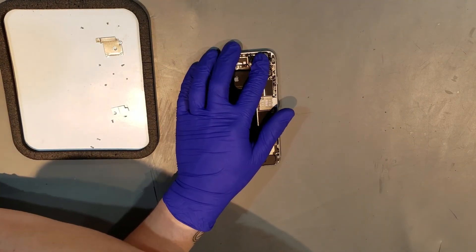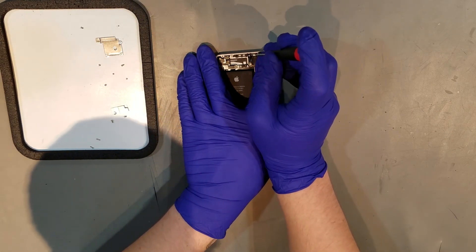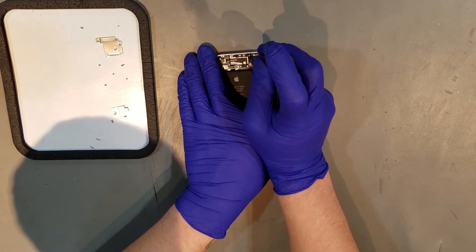After the bracket is sitting snug, the two Phillips screws to hold it in can be put back in along with that Phillips screw that anchors the top of the logic board to that L-shaped bracket.